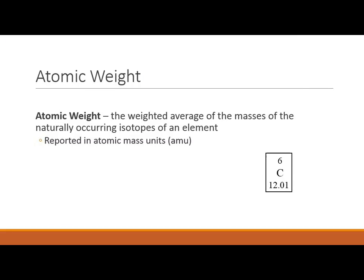Now that we can find protons, neutrons, and electrons for an isotope, let's look at atomic weight. Atomic weight is a weighted average of the masses of the naturally occurring isotopes of an element. If you look at your periodic table for carbon, the atomic number Z is up top, and the number 12.01 below is the atomic weight or atomic mass.